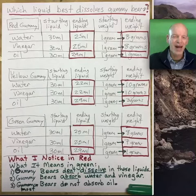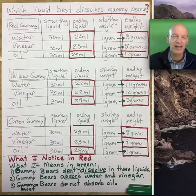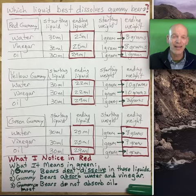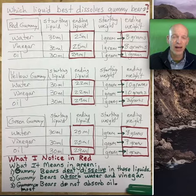I got out my green marker because now I take what I noticed and I start to think about what does all of that data mean to me. Number one, as I look at the things that I highlighted as being interesting: gummy bears do not dissolve in these liquids. They did not disappear or turn into a liquid. The liquid amounts got lower and the weight of the bears got higher.